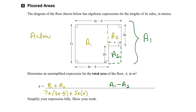Again, area is length times width, and area 2 would be 2x times x. So we'd write it as 2x times x, and in this case we're subtracting these two areas. There are other ways we could have solved this problem too — perhaps drawing a line to separate the floor plan into two different rectangles and adding those together. But let's look at these two expressions and see if simplifying them gives us the same answer.